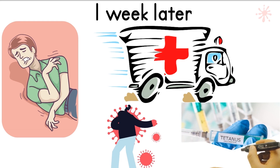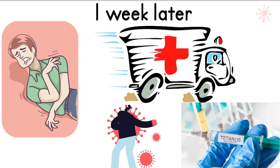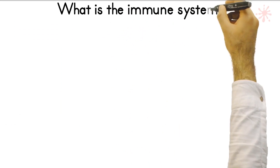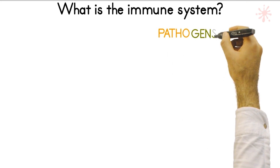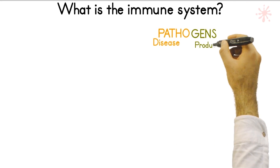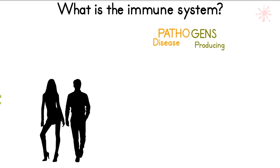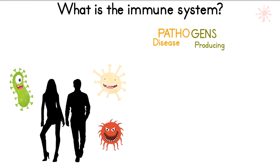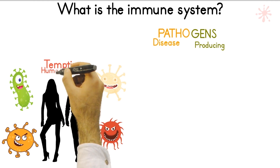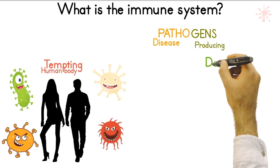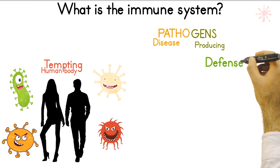What happened to John? His immune system had a breach where an infection could easily access his blood. At the same time, his immune system was not updated to protect against tetanus infection. Pathogens — which are germs that cause diseases, such as bacteria, viruses, fungi, and parasites — are all trying relentlessly to assault our bodies.